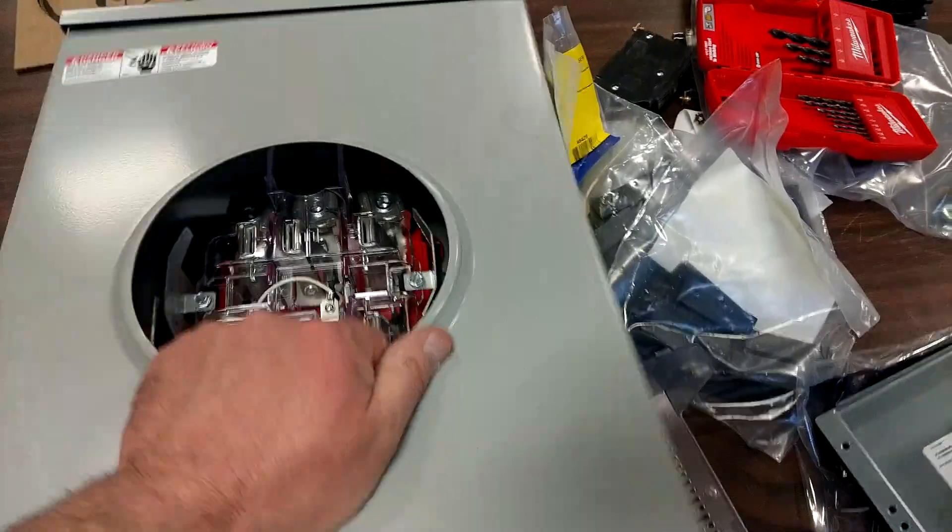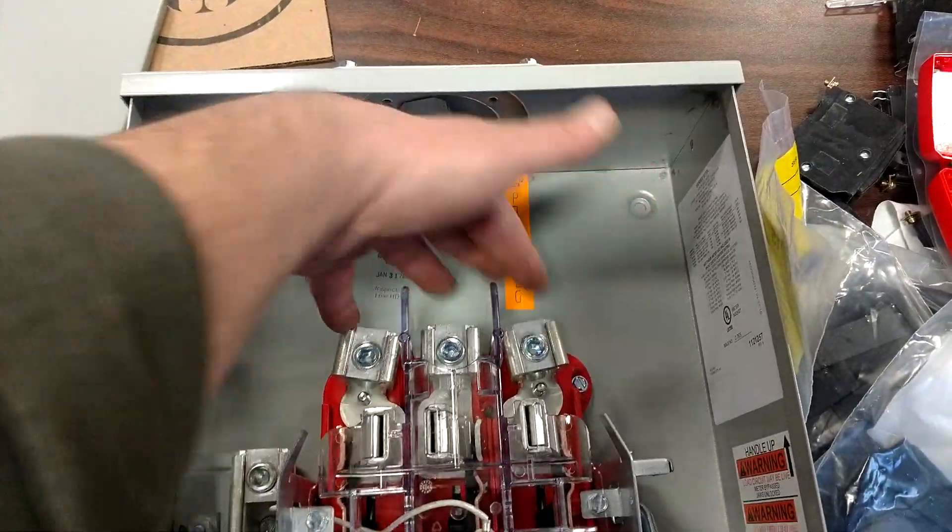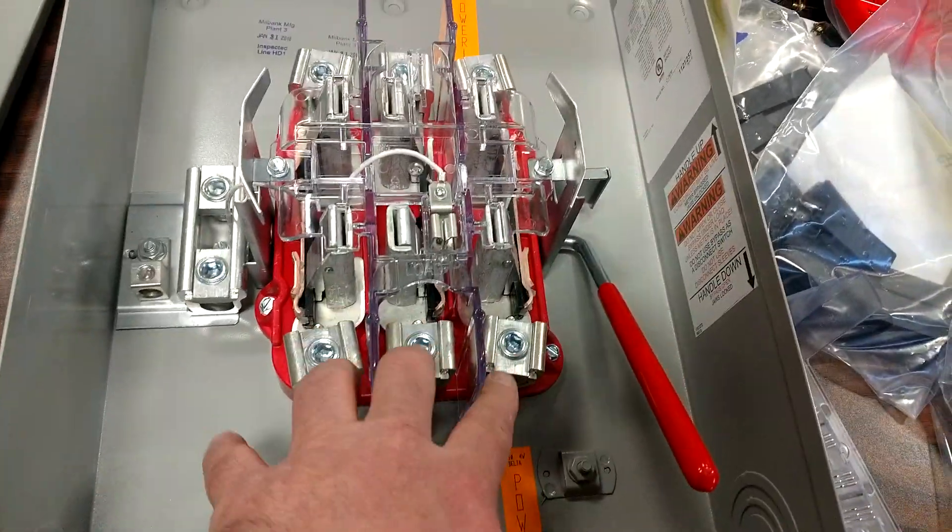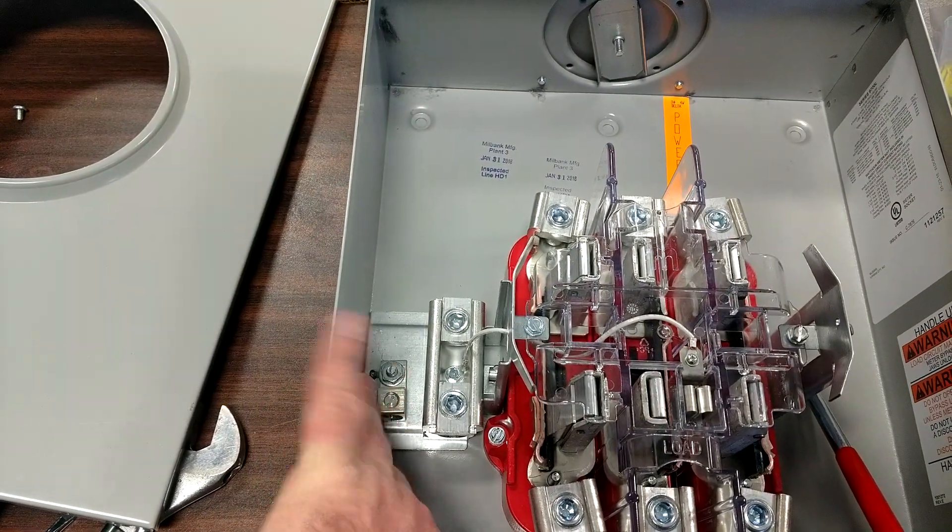Inside, we've got our three-phase line terminals. Here's our load terminals, the neutral, and that's for the grounding electrode.